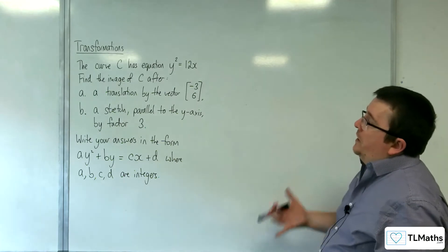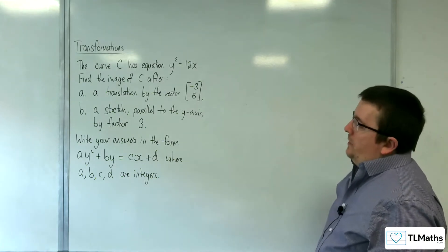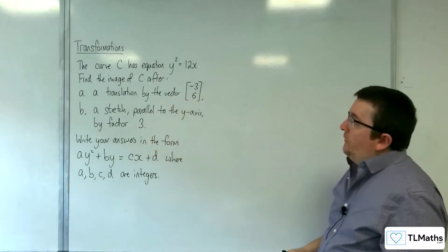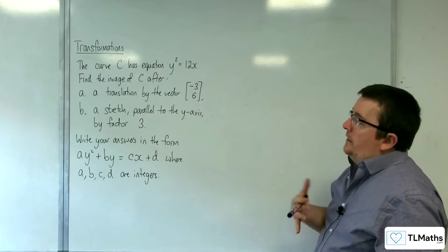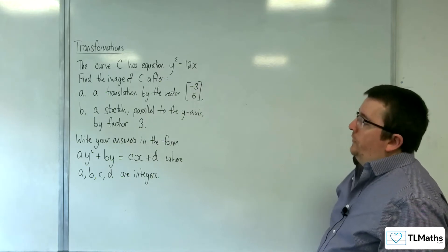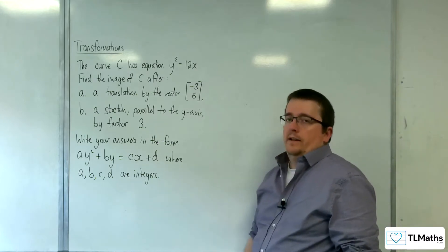In this problem, we've got the curve C with equation y² = 12x. Find the image of C after: firstly, a translation by the vector (-3, 6), and then for part B, a stretch parallel to the y-axis by factor 3. Write your answers in the form ay² + by = cx + d, where a, b, c, and d are integers.